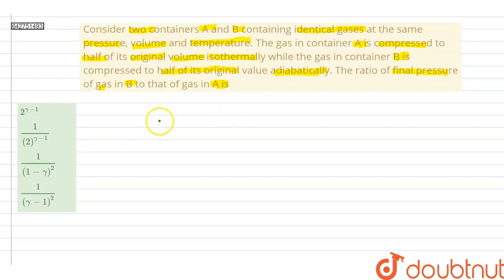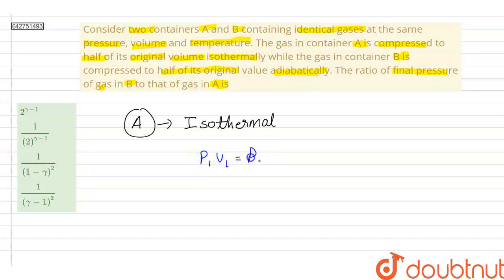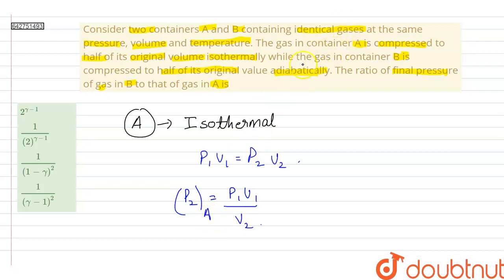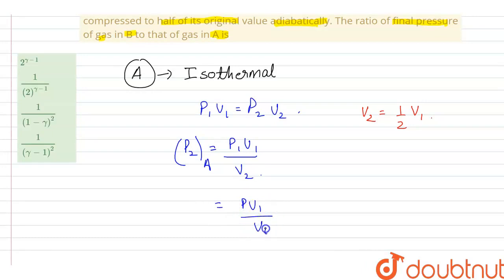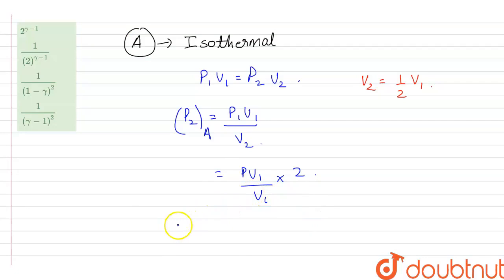Gas A undergoes an isothermal process, so we can write P1V1 = P2V2. From here, the final pressure P2 = P1V1 / V2. Since the gas in container A is compressed to half its original volume, V2 = V1/2. Substituting, we get P2A = P1V1 / (V1/2) = 2P1. This is equation 1.